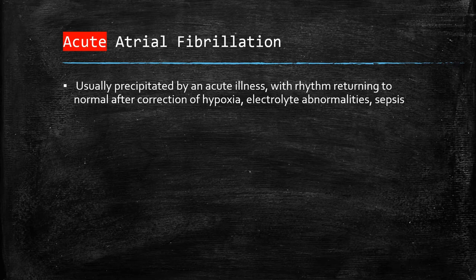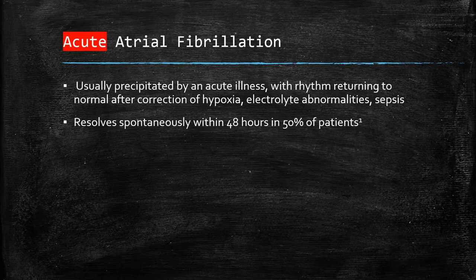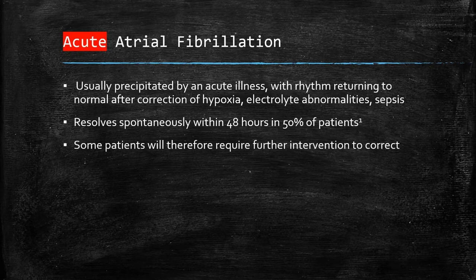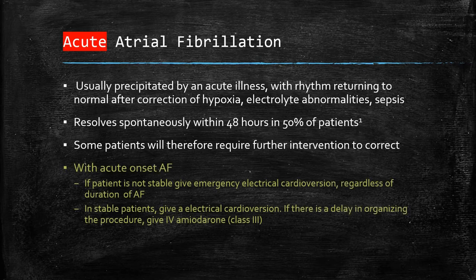Acute atrial fibrillation is usually precipitated by acute illness, and this usually resolves once hypoxia and electrolyte abnormalities are corrected, resolving within 50% of patients in two days, with those in whom acute AF is not corrected requiring further intervention. If the patient is not stable and hemodynamically compromised, give emergency electrical cardioversion regardless of AF duration — we do not wait for it to resolve by itself.